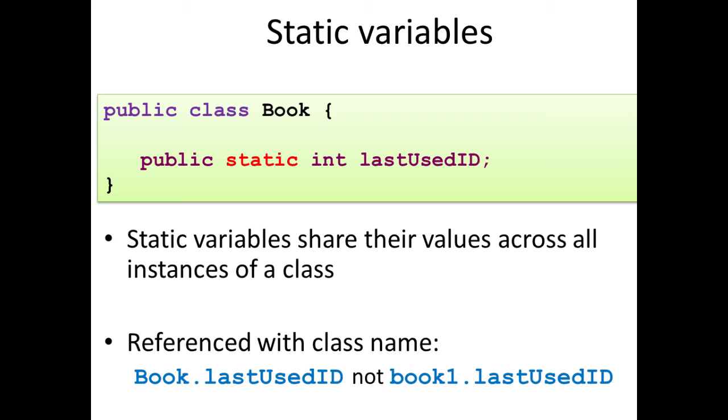We always access static variables by using the class name rather than the instance name. For example, if we'd created a static variable called last used ID on our book class, we would call it using book dot last used ID where book is the name of our class and not, for example, book one with a lowercase b dot last used ID where book one is an instance of a class. Now, you can use book one dot last used ID. That will work, but it's a bit confusing because how would you know or how would another programmer looking at your code know that that is a static variable? Well, there is no way to tell. So it's good programming practice to always use the class name, not an instance of a class name when referencing a static variable.